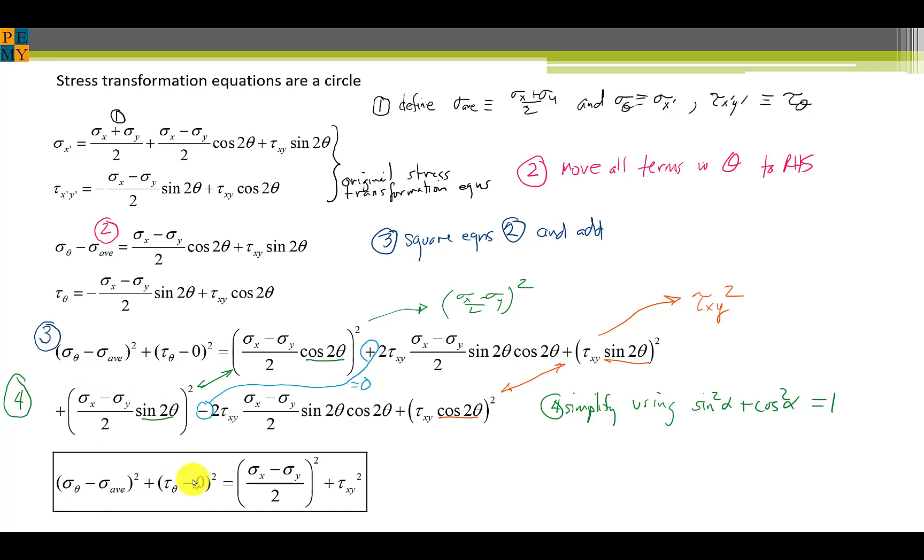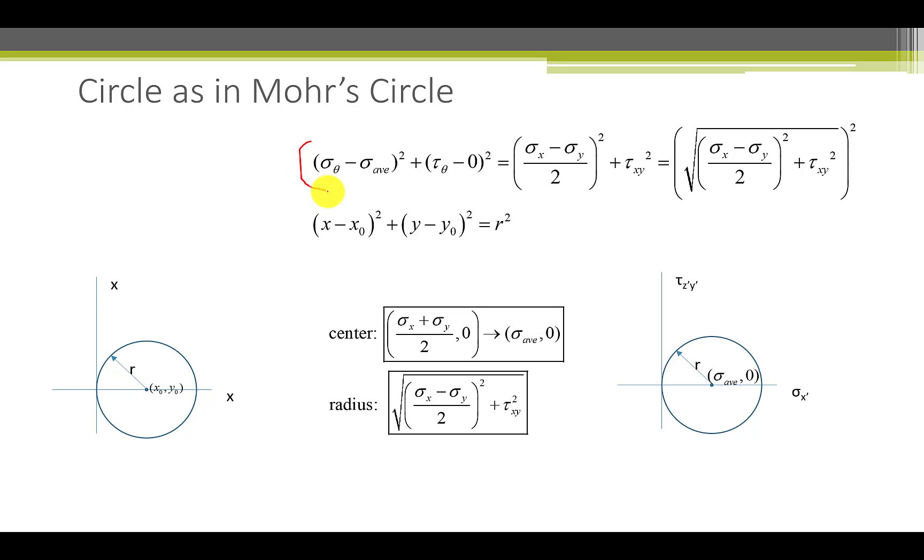The whole thing simplifies. This left-hand side goes here, and the right-hand side, after deleting the middle terms and simplifying these other terms becomes this formula here. So this is the formula of a circle. It's a circle that's centered at sigma average and zero, and that's why we chose zero at this point. And its radius is the right-hand side, the radius squared.